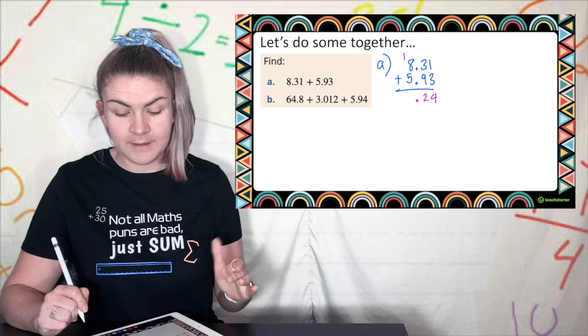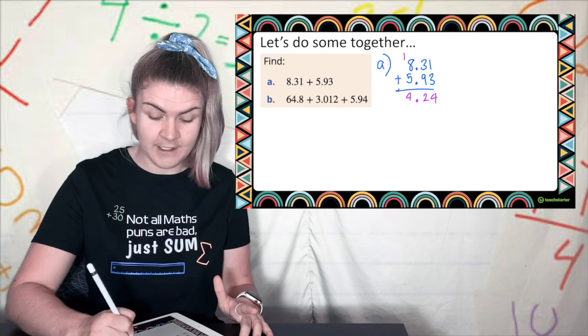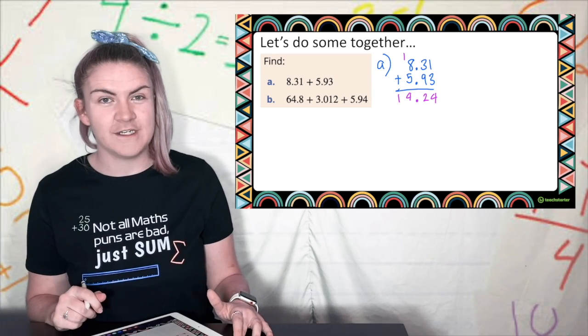Now the next thing I've hit is the decimal so I'm going to put a decimal. Now continue. 1 plus 8 is 9 plus 5 is 14. 4 nothing to carry the 1. There we go 14.24.